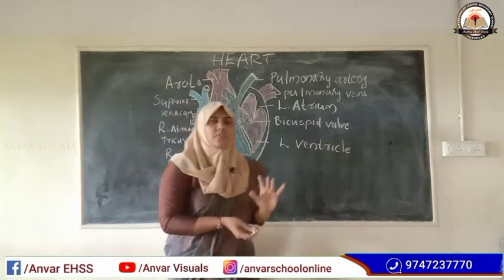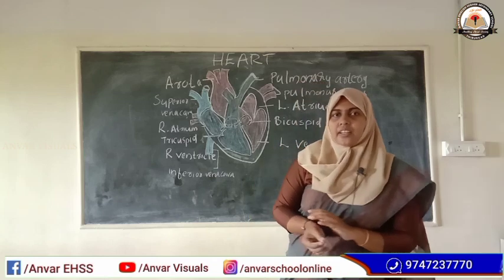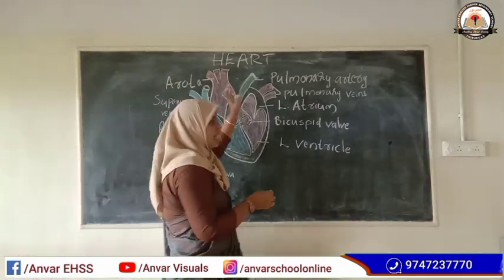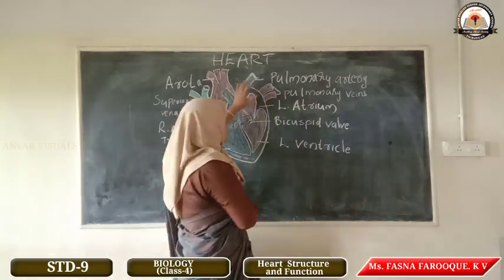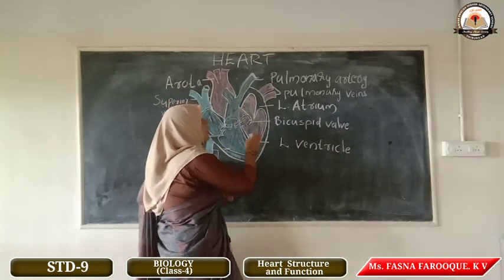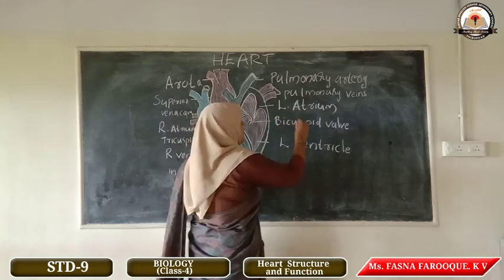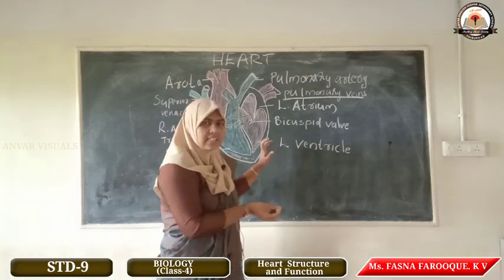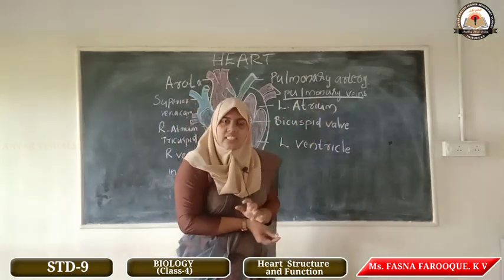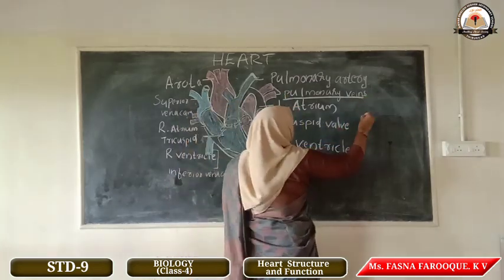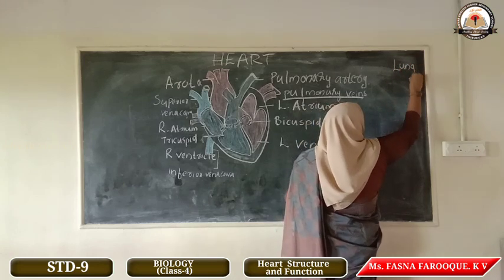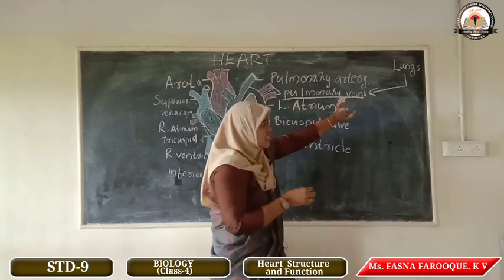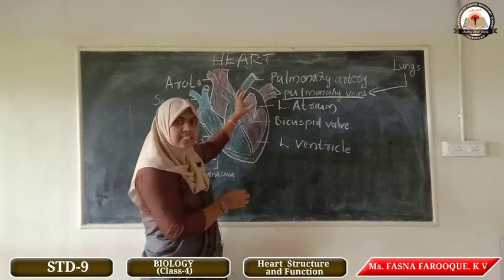Now we move to the function of the heart. The lungs contain oxygen, so the blood carrying oxygen is called oxygenated blood. The pulmonary veins carry the oxygenated blood. In a previous class, we studied that veins carry deoxygenated blood, but in the case of the heart, the pulmonary veins carry oxygenated blood from the lungs to the heart. The first part it enters is the left atrium.